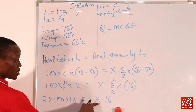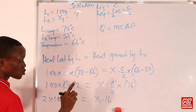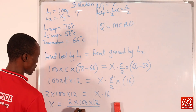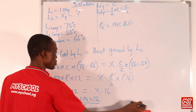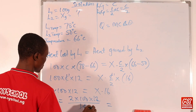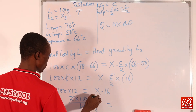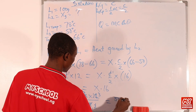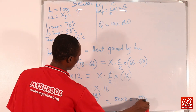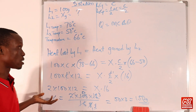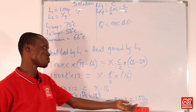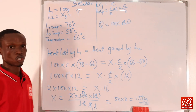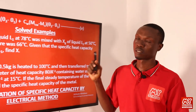Making s the subject by dividing both sides by 16: s = (2 × 100 × 12) / 16 = 2400 / 16 = 150 grams. The answer is 150 grams.